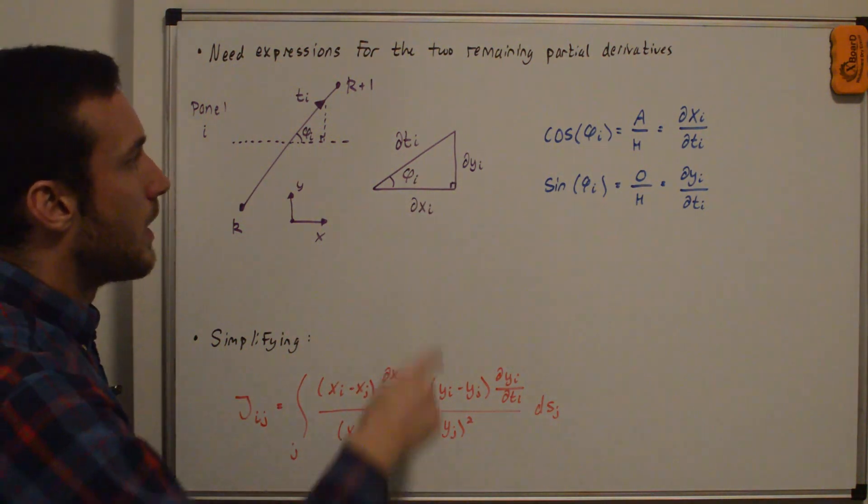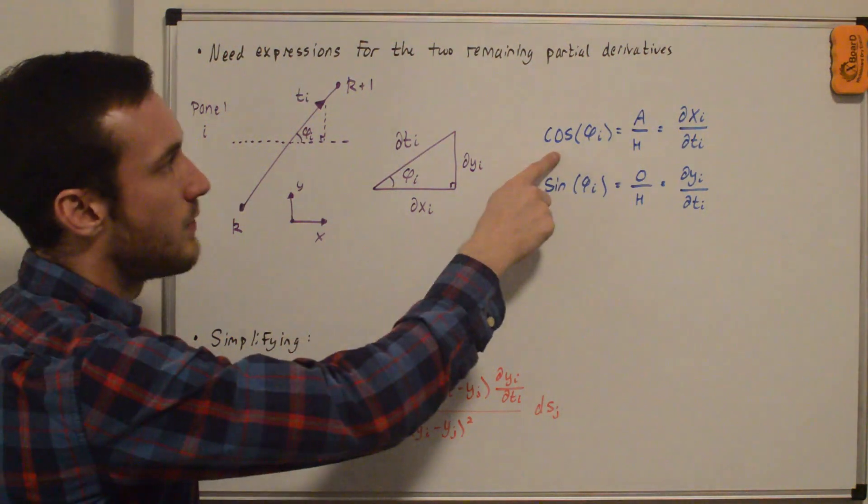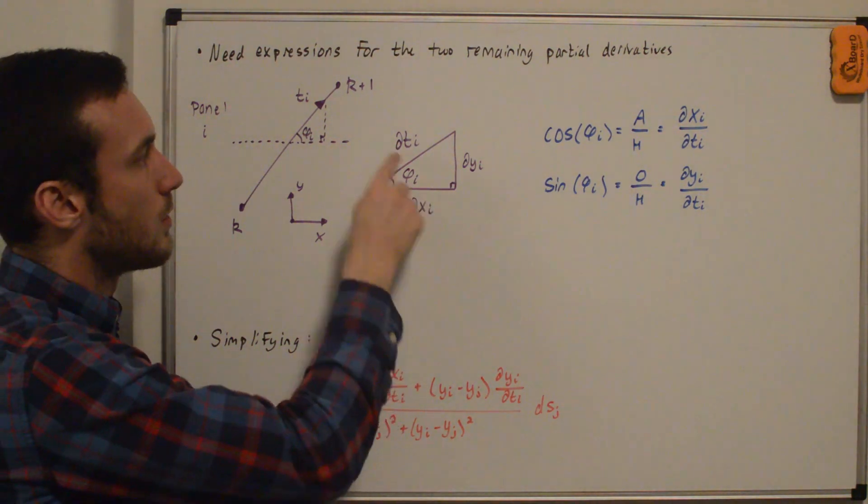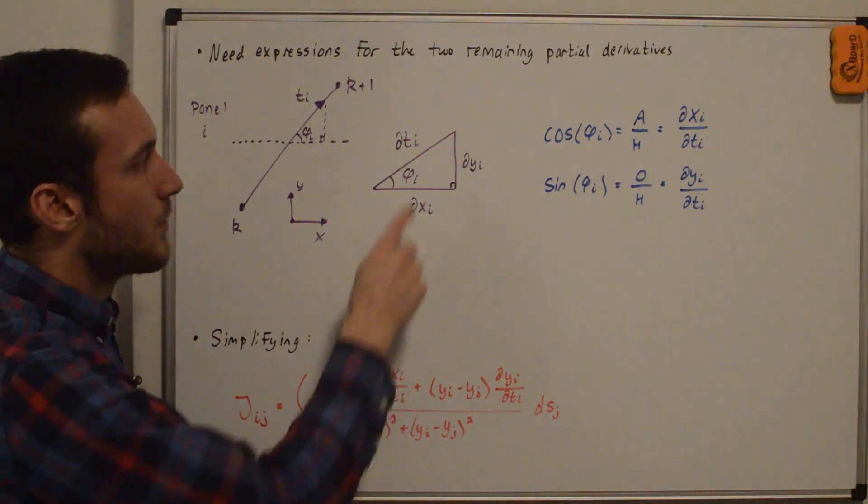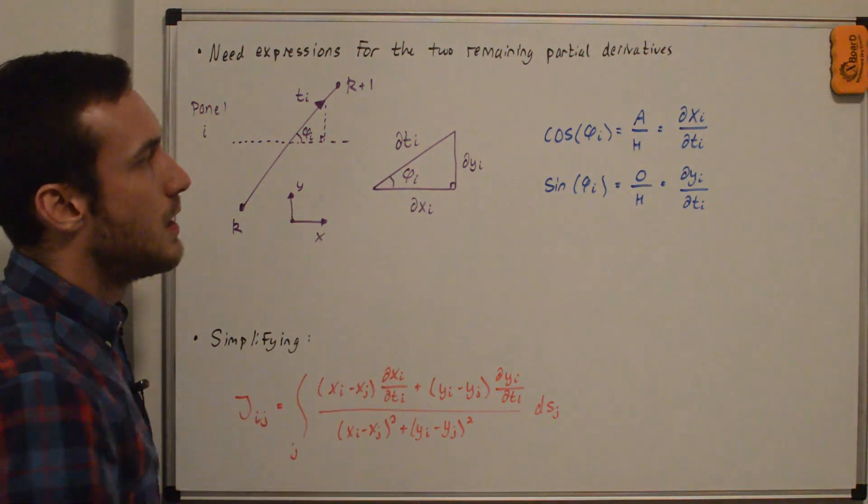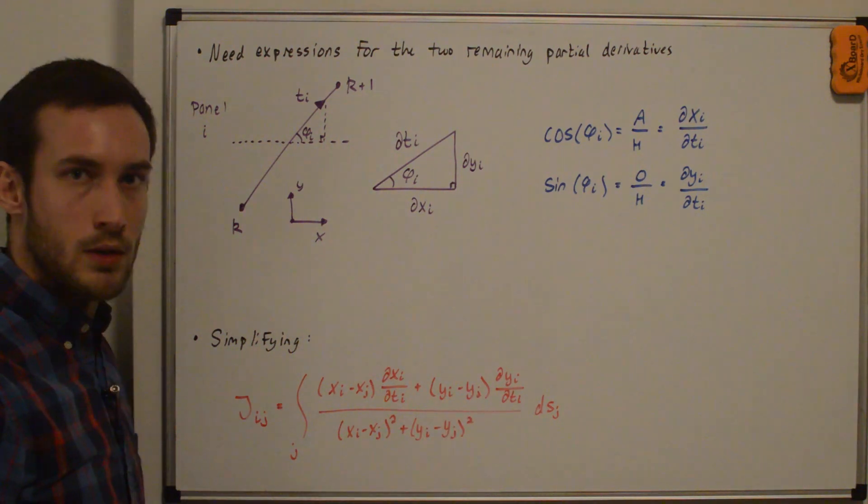And we can get an expression for cosine of phi i and sine of phi i. So cosine of phi i is equal to adjacent over hypotenuse, dxi/dti. Sine of phi i is opposite over hypotenuse, dyi/dti. And we can just plug those straight into this equation down here.